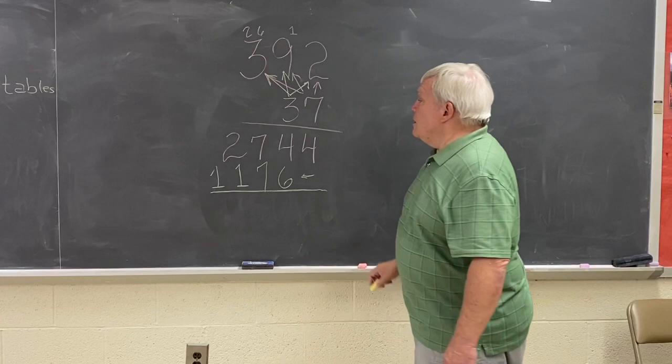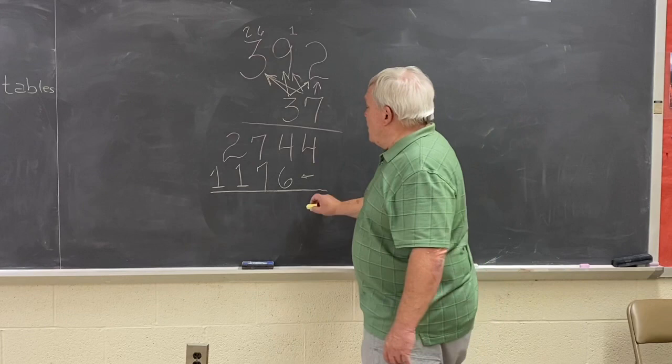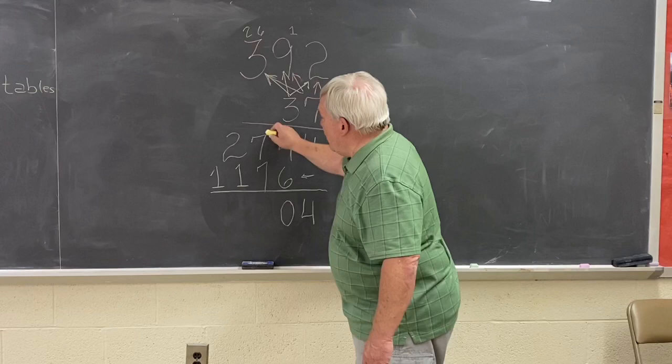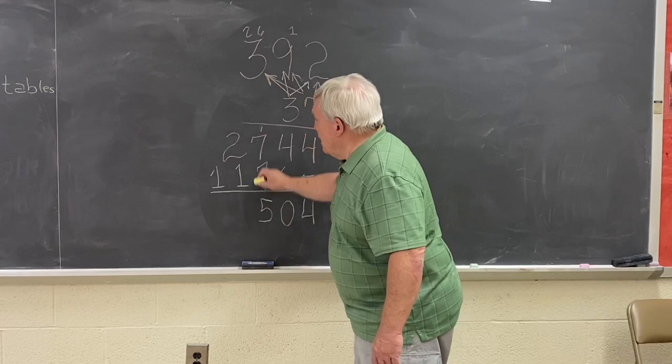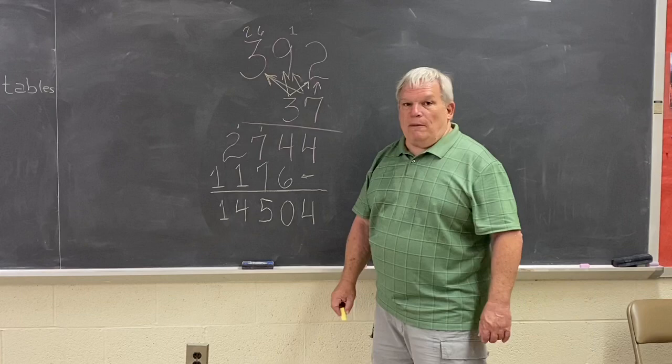So now all I have to do is add my numerals and it will give me my answer. So I bring down my 4. 4 and 6 is 10 so I put down my 0 and carry my 1. 7 and 7 is 14 plus 1 is 15. Carry my 1. 1 plus 2 is 3 plus 1 is 4. And bring down my 1 because there's nothing else to add to it. And my answer is 14,504.